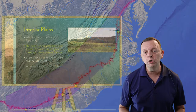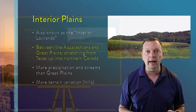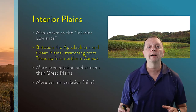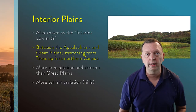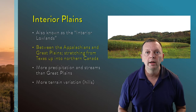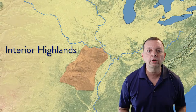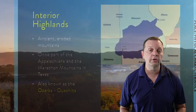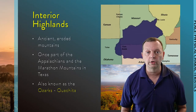West of the Appalachians, we find the Interior Plains, which are often known as the Interior Lowlands. This plain of rolling hills extends from Texas all the way up to northern Canada. To the south of the Interior Plains, we find the Interior Highlands — ancient mountains that used to be part of the Appalachians and Texas's Marathon Mountains. Today, these highlands are known as the Ozarks in Missouri or the Washitas in Arkansas.